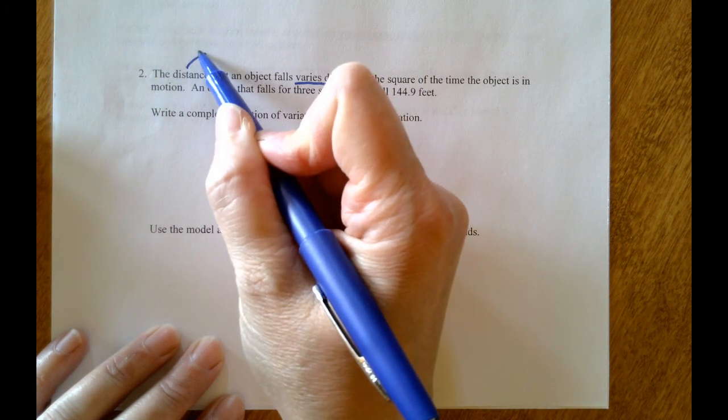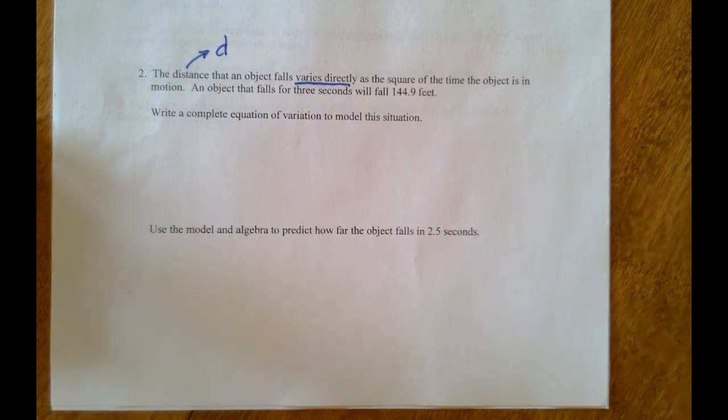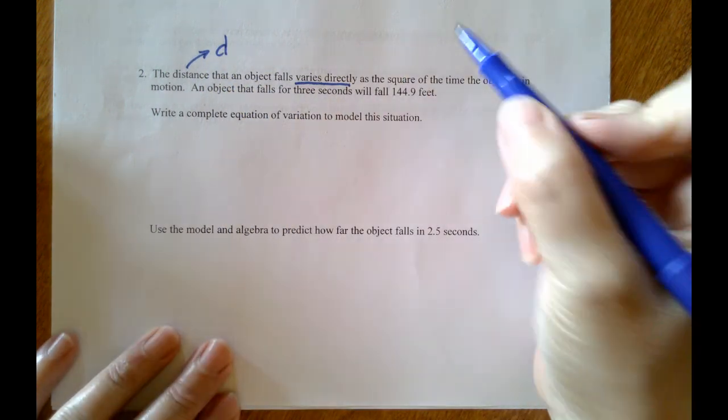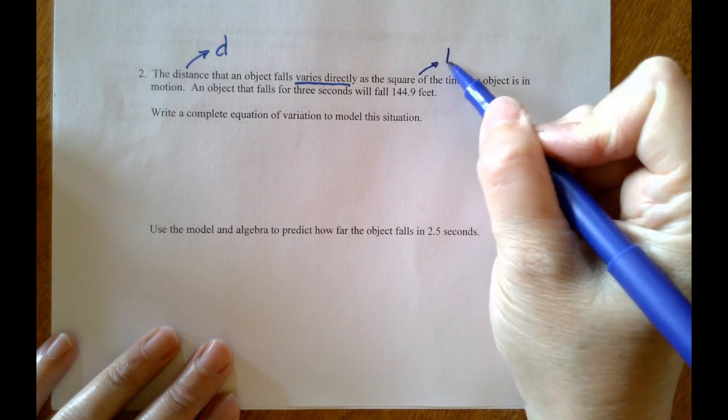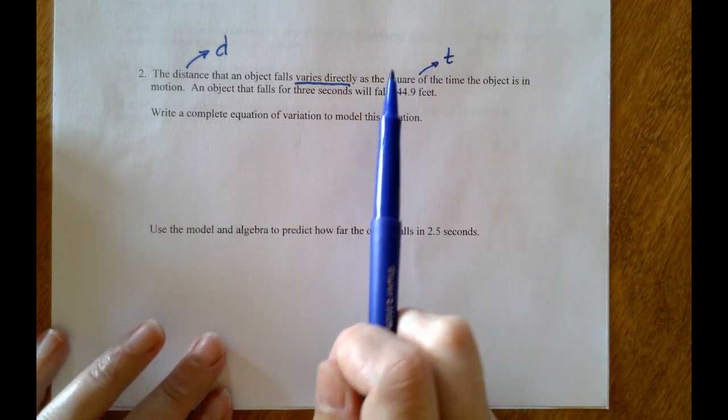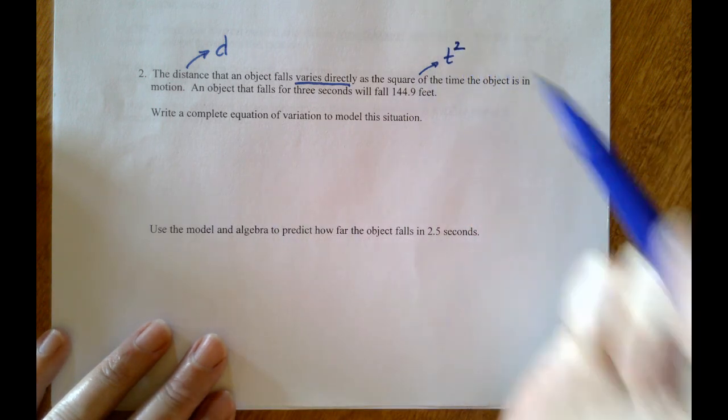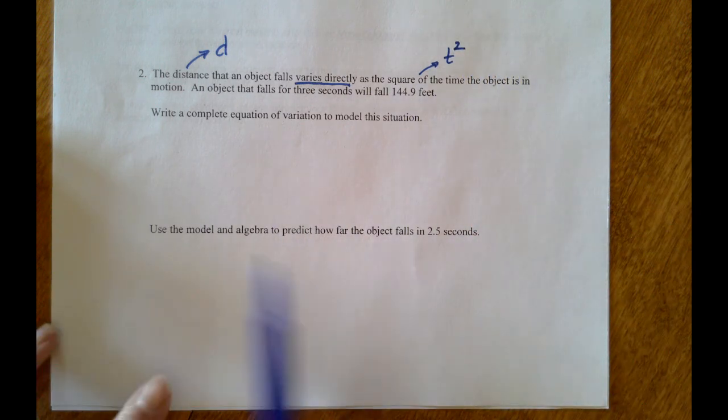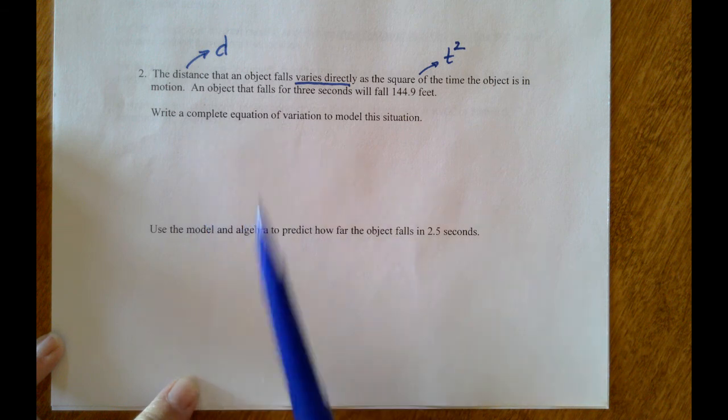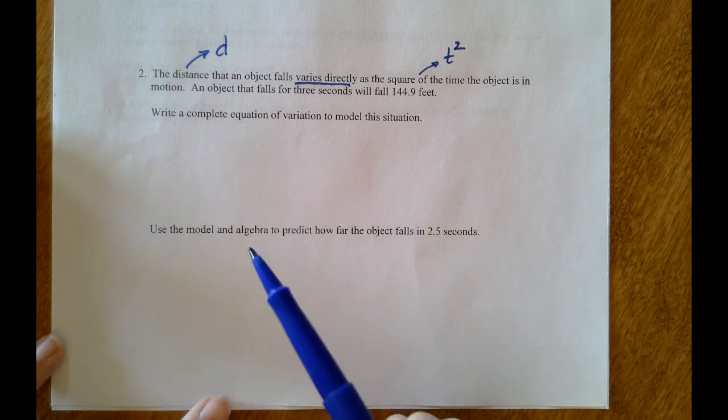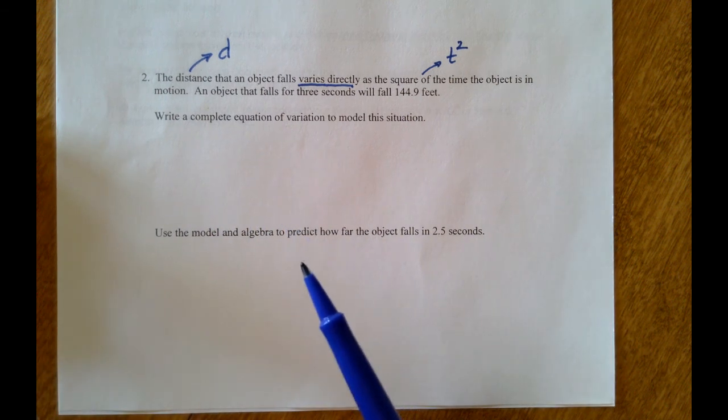They didn't give us any variables, but let's go put some in. Let's use d for distance, and then let's use t for time. And we will be very careful: it's the square of the time, that means t to the 2, or t squared. They want a complete equation of variation for this situation right away, so we have to do a few steps, a little bit of work.